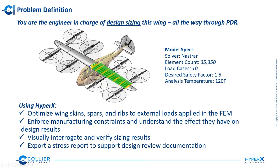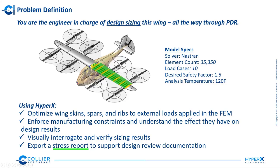We can take all of this information and, using HyperX, optimize the wing skins, spars, and ribs to all of those external loads applied in the FEM. We're also going to enforce various manufacturing constraints to understand the effect they have on the design results. Every step of the way we'll visually interrogate and verify all the results, and at the very end we'll print a stress report to simulate something you might need for a design review.